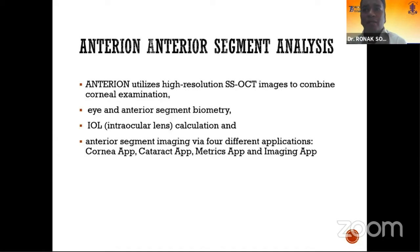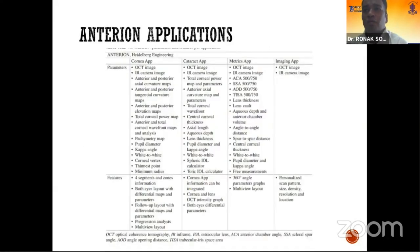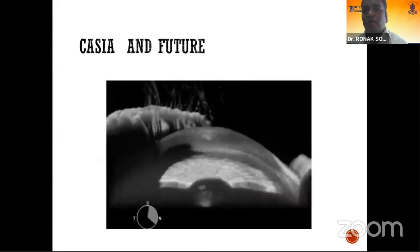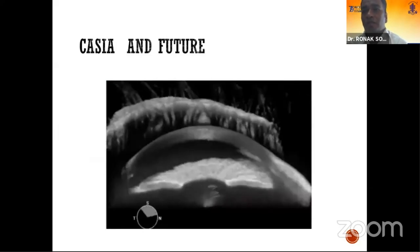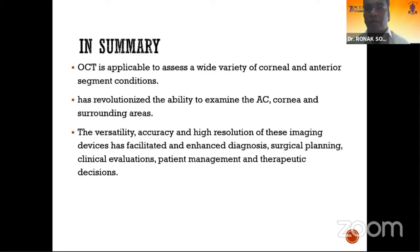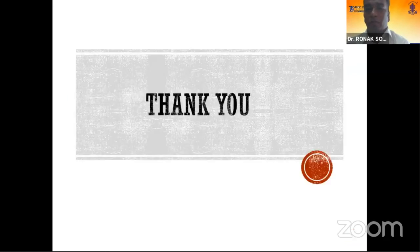Newer devices like Anterion combine a biometer, topography, and ASOCT — in this application, the sky is the limit; you can do everything in one scan with one machine. The future of Cassia includes 3D imaging reconstruction. In summary, OCT is applicable to assess a wide variety of corneal and anterior segment conditions and has revolutionized the ability to examine the anterior chamber, cornea, and surrounding areas.